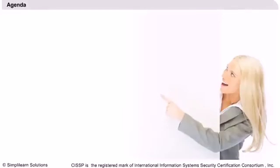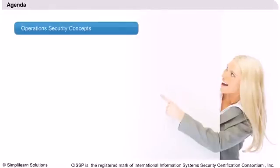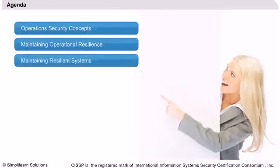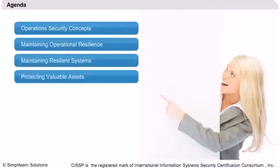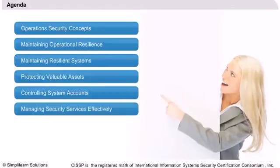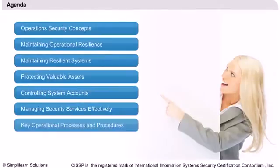Our agenda for this domain is as follows. We start with the basic concepts of Operations Security. This will then be followed by the topics Maintaining Operational Resilience, Maintaining Resilient Systems, Protecting Valuable Assets, and Controlling System Accounts. Finally, we will discuss how to effectively manage security services and key operational processes and procedures.